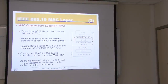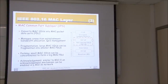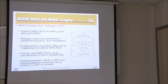There's also the MAC common parts sublayer. From above we got packets, they were split into MAC SDUs. Now it takes these MAC SDUs and converts them into MAC packet data units (PDUs), and manages connection establishment, bandwidth allocation, and quality-of-service management. It takes care of fragmentation — large SDUs can be fragmented into smaller PDUs depending on the type of connection. It also does packing — small SDUs can be concatenated to form larger MAC PDUs. And it takes care of acknowledgements, similar to what we had in 802.11.